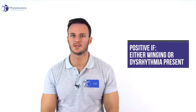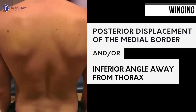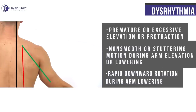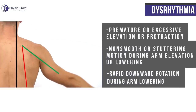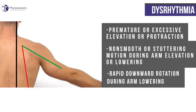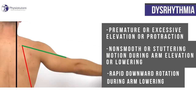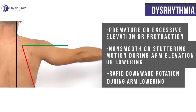Scapular dyskinesis is present if either winging or dysrhythmia is present. Winging was defined as posterior displacement of the medial border and/or the inferior angle of the scapula away from the thorax. Dysrhythmia was defined as premature elevation or excessive elevation or protraction before 60 degrees of humerothoracic elevation, non-smooth or stuttering motion during arm elevation or lowering, or rapid downward rotation during arm lowering.